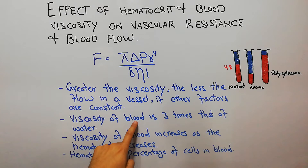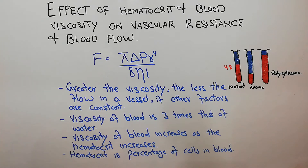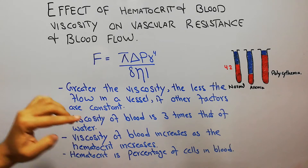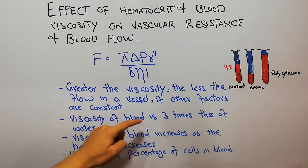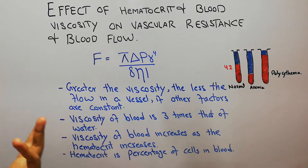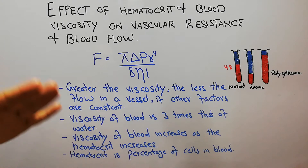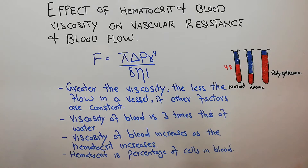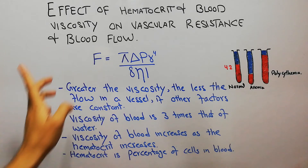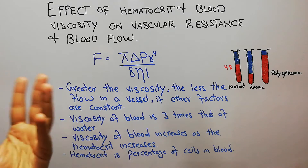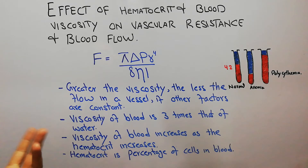The viscosity of blood is three times that of water — blood is thicker than water. It's thicker because the viscosity of blood is greater than that of water. So increasing the viscosity decreases the flow because they are inversely proportional.